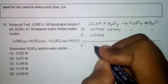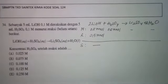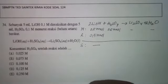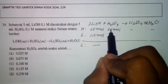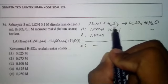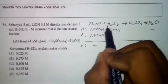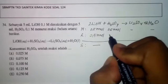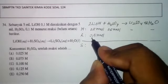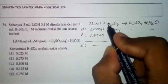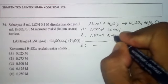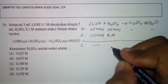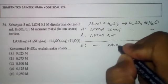LiOH tidak tersisa. Kemudian H2SO4, berapa yang bereaksi? Kita menggunakan perbandingan koefisiennya. Perbandingan mol H2SO4 dengan mol LiOH adalah 1 banding 2, sehingga H2SO4 yang bereaksi adalah (1/2) × 0,5 = 0,25 milimol.